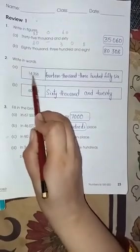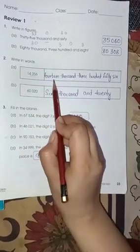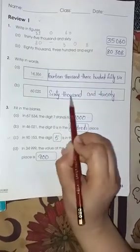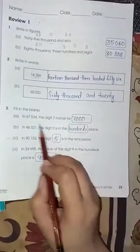Now, write in words. Here you have to write these numbers in words or spellings: 14,356 and 60,020.